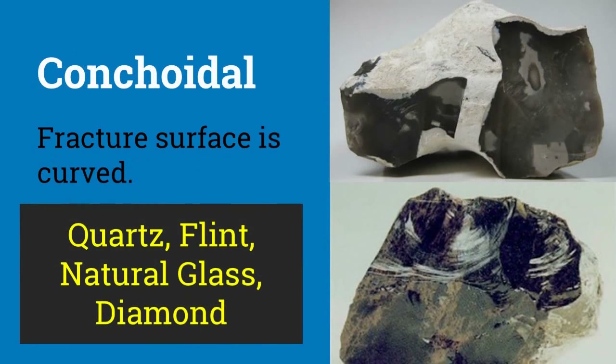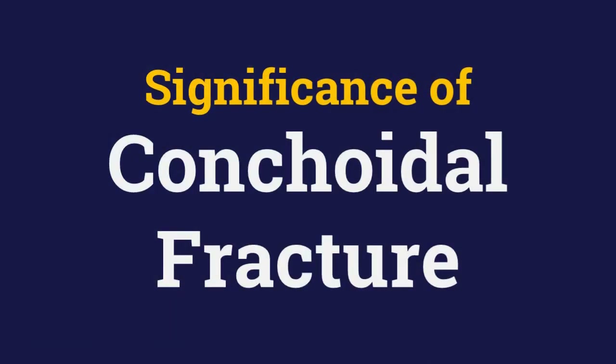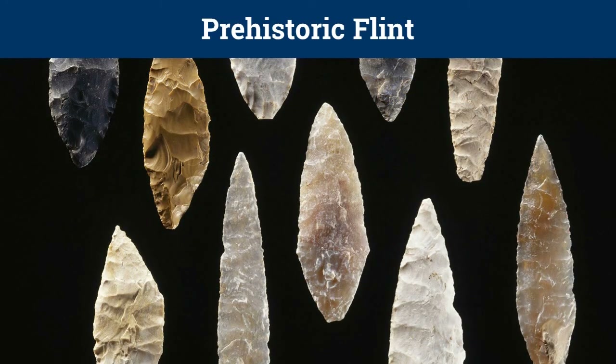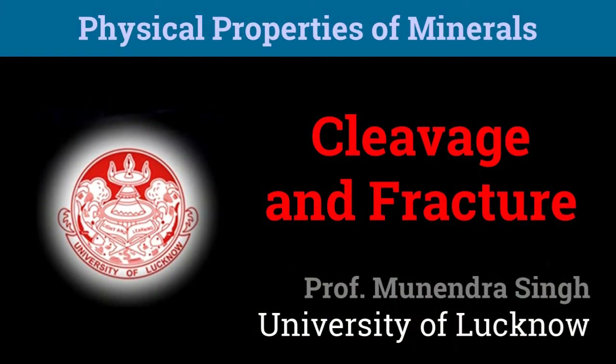And finally, when the mineral breaking surface is curved, the fracture is called conchoidal. Quartz, flint, natural glass, and diamond show this fracture. This conchoidal fracture had great significance to early human ancestors, as they used this property to carve stone tools out of flint. When two curved surfaces meet, they produce an extremely sharp edge perfectly suited to be used as arrowheads, hammers, spears, and other tools, which greatly helped prehistoric humans to survive in the wilderness.